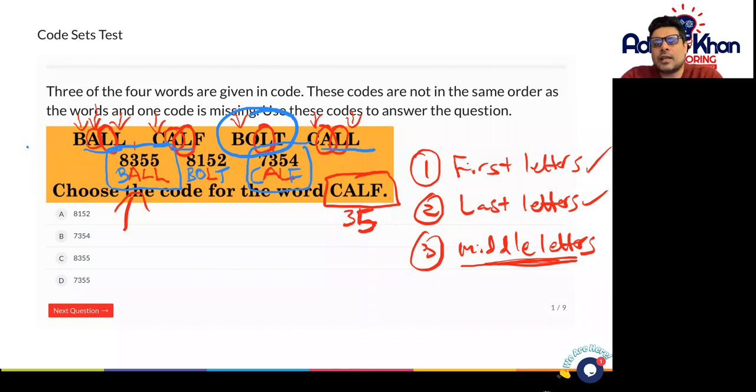This way we've actually joined up the numbers and the letters together. So let's work out what c is then. So c stands for seven and f in this case stands for four. So the answer for this question is going to be 7354.